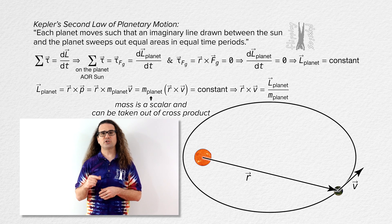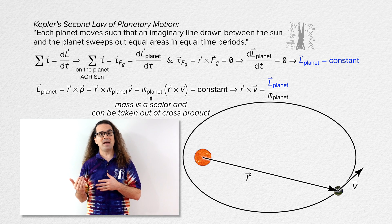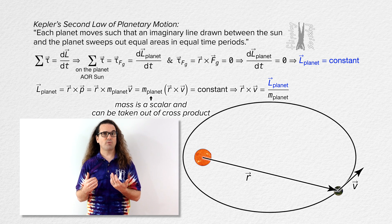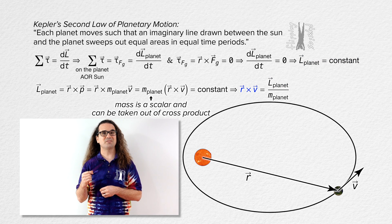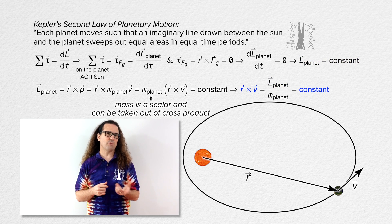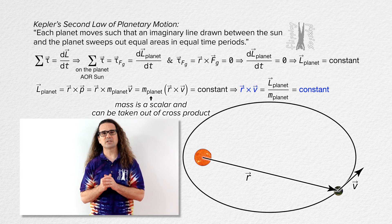We already showed that the angular momentum of the planet is constant, and we know the mass of the planet is constant. Therefore, we now know that the cross product of the r position vector and the velocity of the planet is constant. That will be helpful a bit later in this derivation.